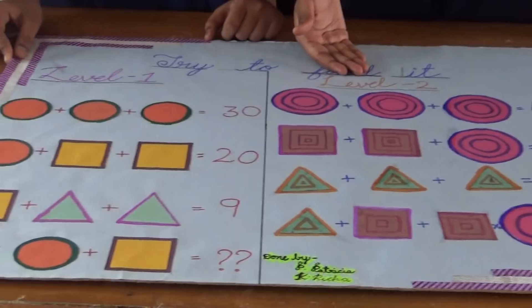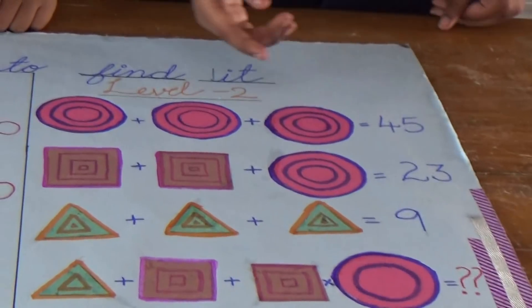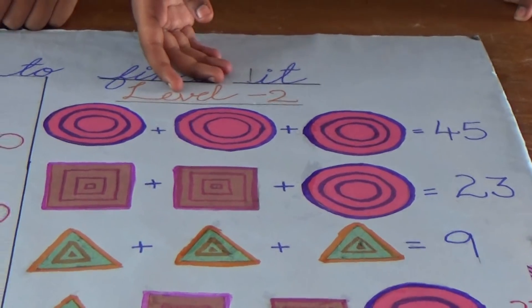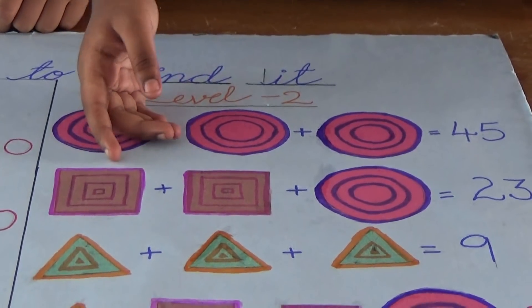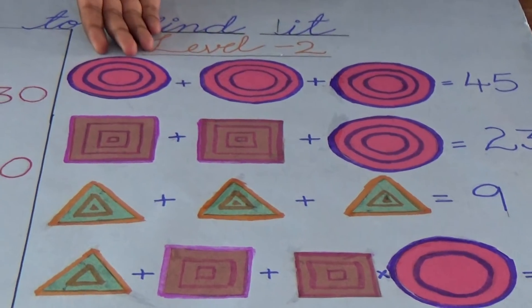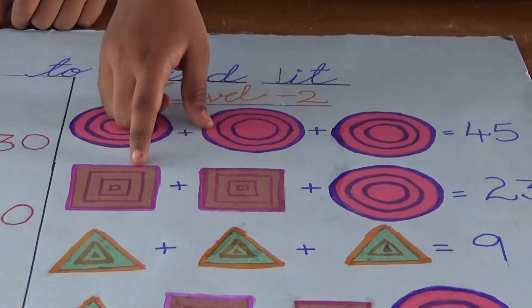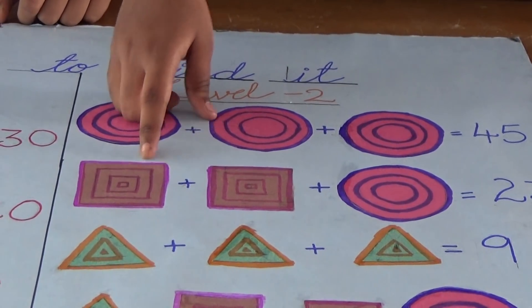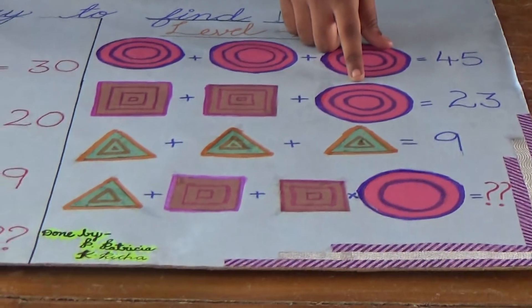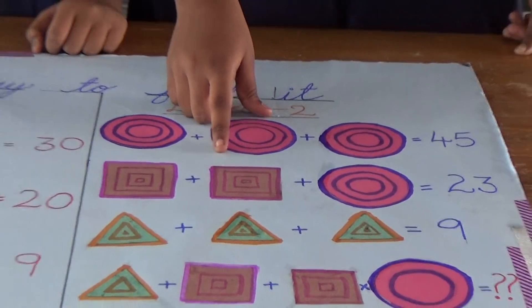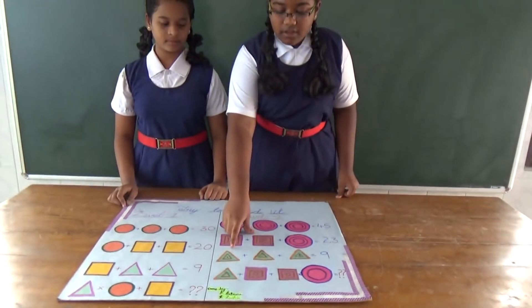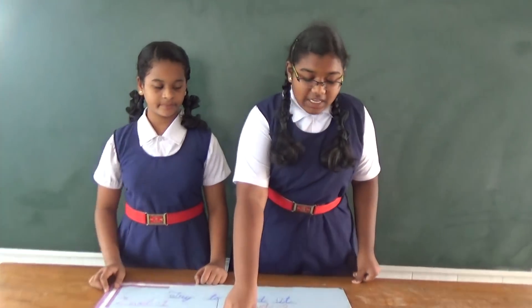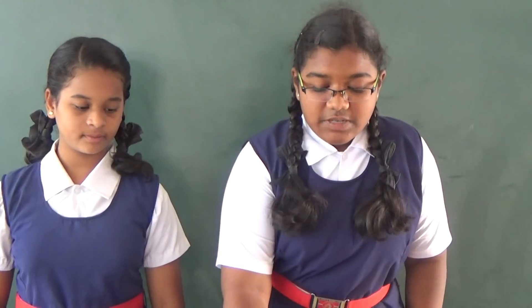In Level 2, we know that 45 divided by 3 equals 15, so each circle's value is 15. The square's value is 4 because 23 minus 15 equals 8, and 8 divided by 2 equals 4. The triangle's value is 3 because 9 divided by 3 is 3.